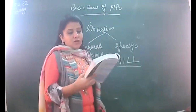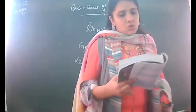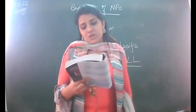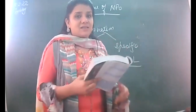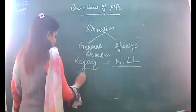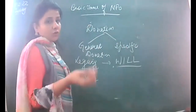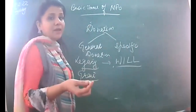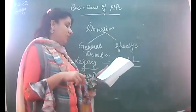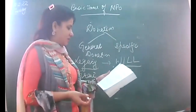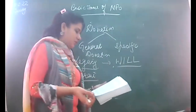The donor may or may not specify the use of a legacy. In case no condition is specified, it is to be written on the credit side of the income and expenditure account. If a condition is attached, it is to be shown on the liability side of the balance sheet. Grant is basically given to NPOs by the central government or by the state government. A grant received for a specific purpose is a capital receipt.